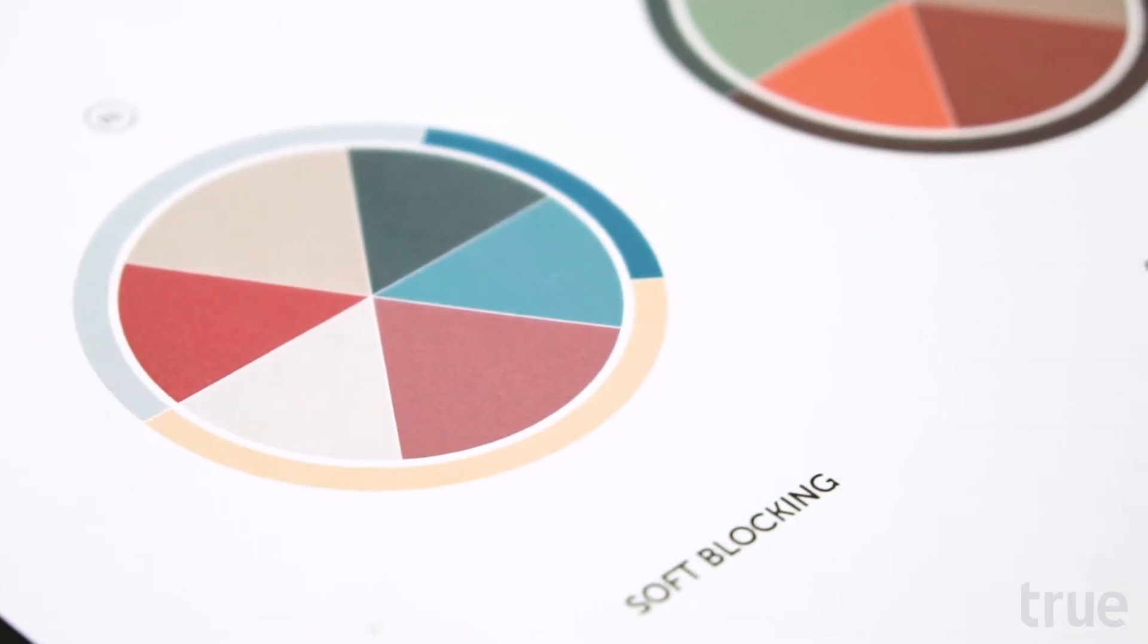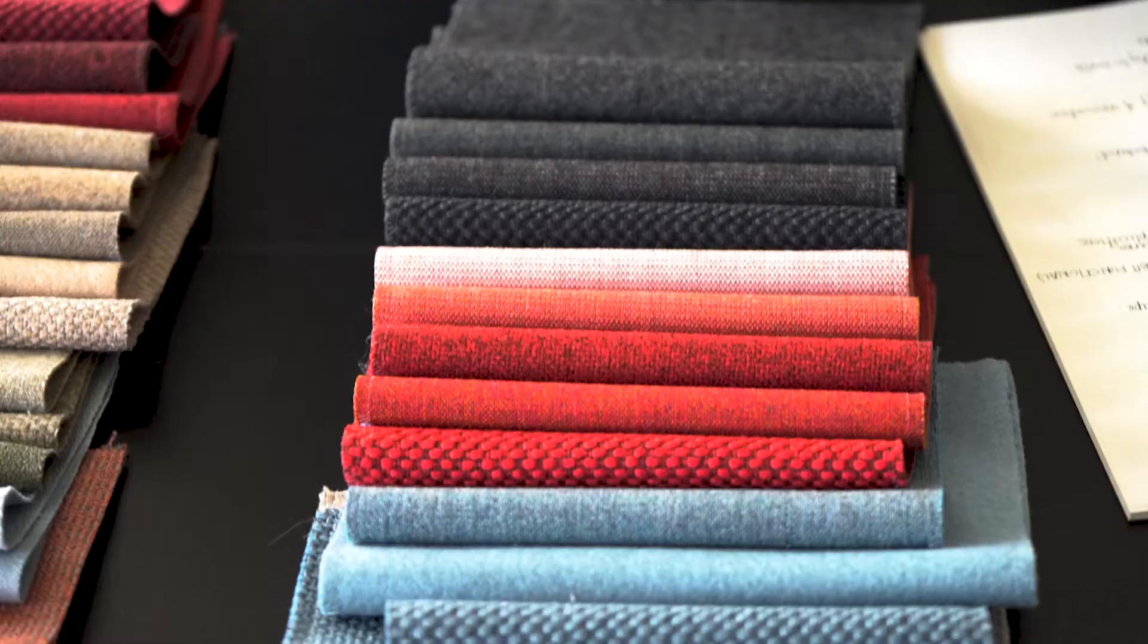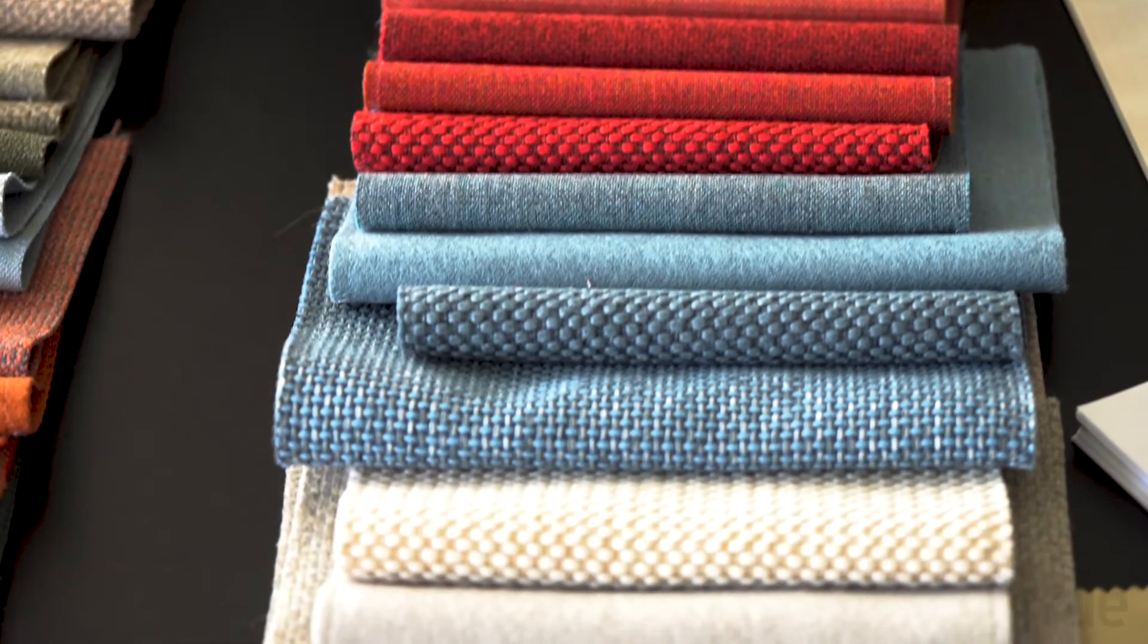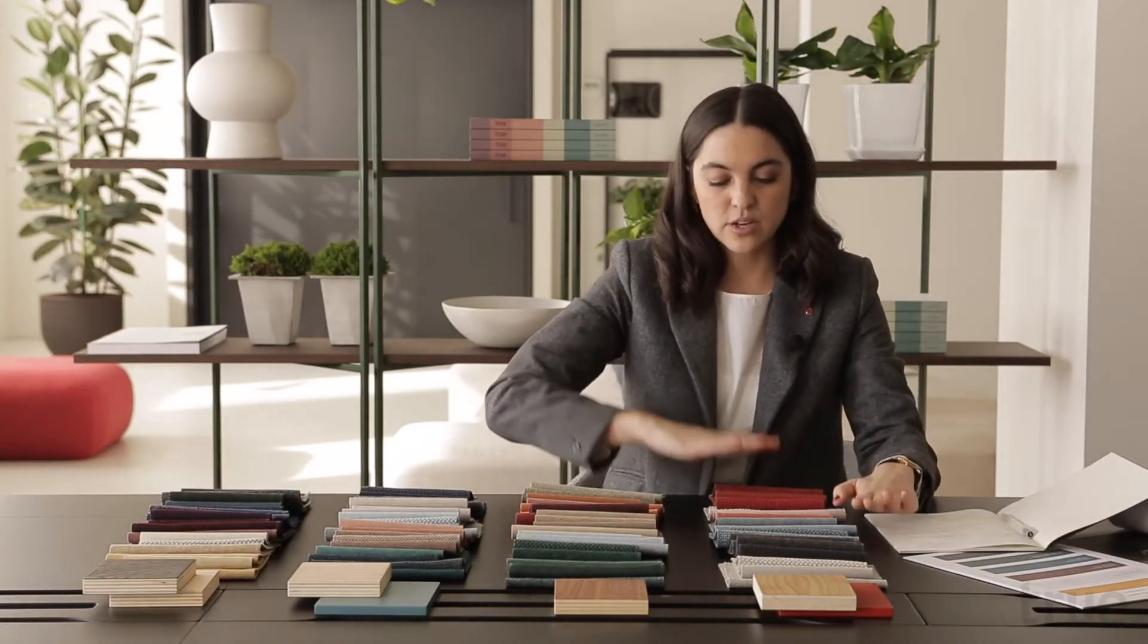The name of our first trend is Soft Blocking. The color palette represents mainly the delicate colors that enhance the shapes and the monoblocks and monomaterial designs. We have a really strong accent. We have neutral colors then the accent of the red and the light blue.